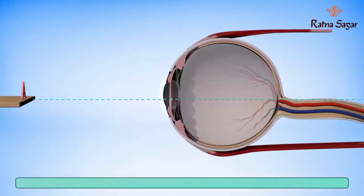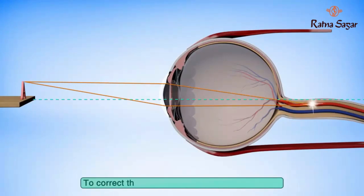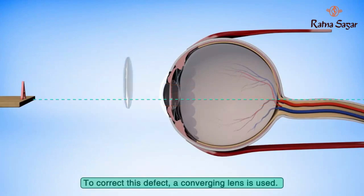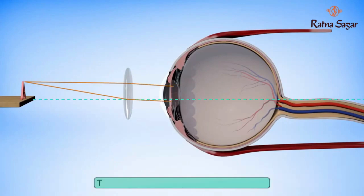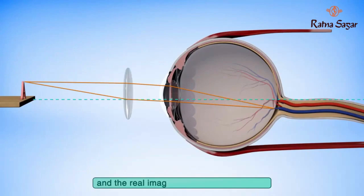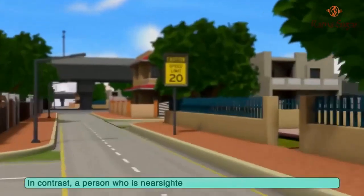The light rays from nearby objects cannot be focused by the time they reach the retina. To correct this defect, a converging lens is used — this lens bends the light rays together before they enter the eye. The eye lens then completes the bending and a real image is formed on the retina.